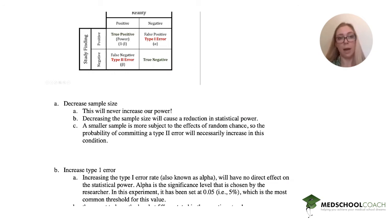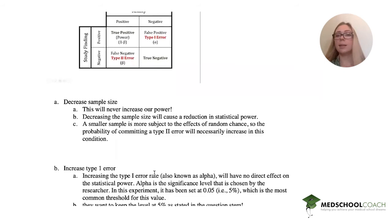will have no direct effect on power because power is only true positive or false negative. So alpha is the significance level that's chosen by the researcher. It's set at 0.05, aka 5%, which is the most common percentage.